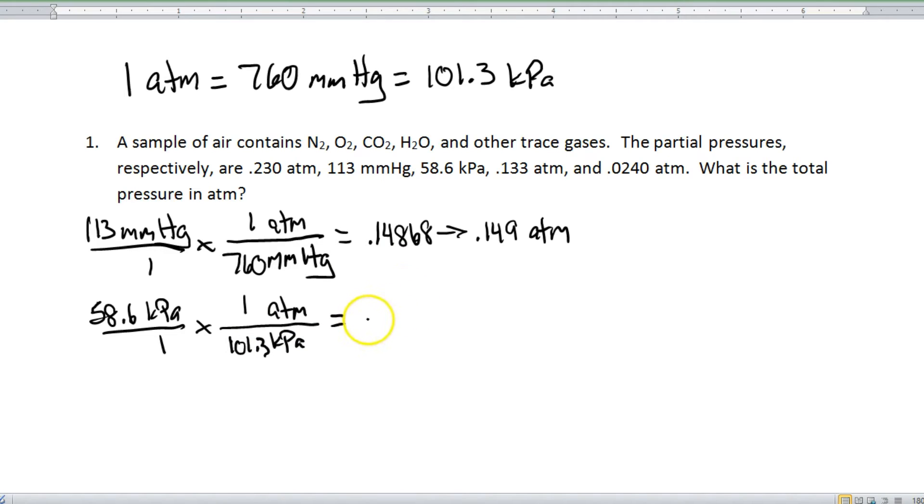So it's 58.6 divided by 101.3, and what we end up with is 0.57847, which then rounds to 0.578 atmospheres with the correct sig figs.